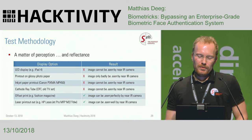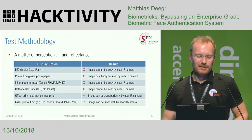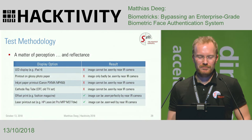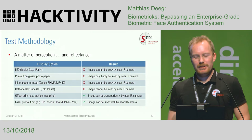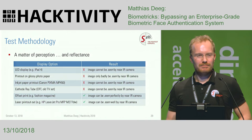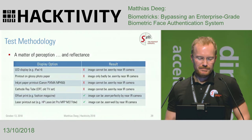So I tested a laser printer, and I found out the image can be seen well enough by the near IR camera — not as good as having a professional offset print, but good enough for our purposes. The toner of laser printers has the right reflectance to be used for the near IR sensors to trick them.